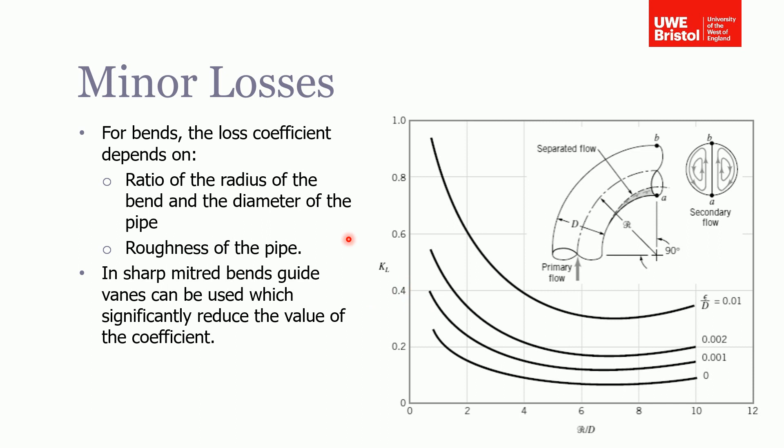So you can then use that to find out the pressure loss in this component, and particularly for sharp bends, if you want to reduce the pressure loss, then you can use guide vanes to help reduce the value of the loss coefficient.